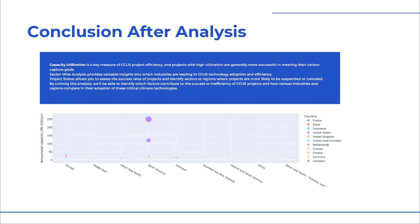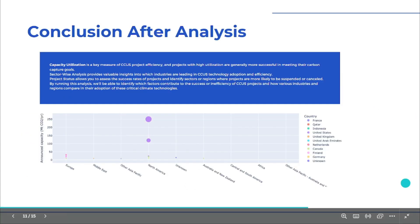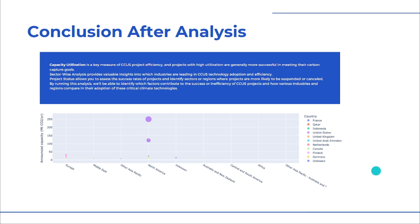In conclusion, capacity utilization is crucial to project success — projects with high utilization rates are more successful in meeting carbon capture targets. Power generation is leading in CCUS adoption, but sectors like cement and oil and gas face more technical challenges. Regions with higher carbon prices tend to have more success with CCUS projects, with fewer cancellations and suspensions.